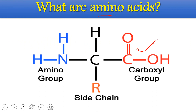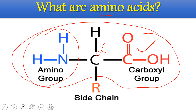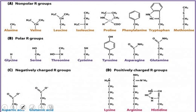Alpha amino acids are so called because the NH2 group is present on the alpha carbon — the carbon adjacent to the carboxylic acid group. All 20 amino acids used in protein synthesis are alpha amino acids. They all share a common backbone; they differ only in their R group. So the 20 amino acids have 20 different R groups, and the chemical nature and properties of each amino acid vary according to its R group.